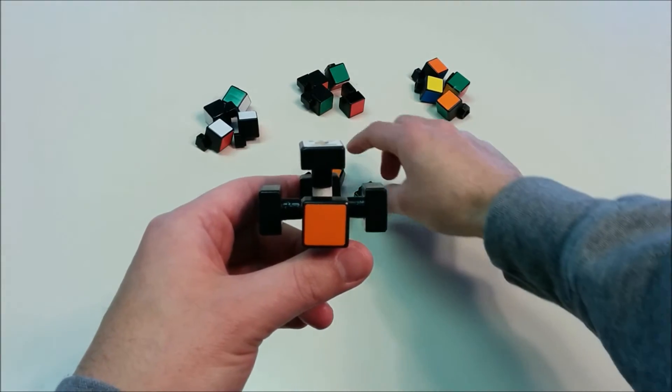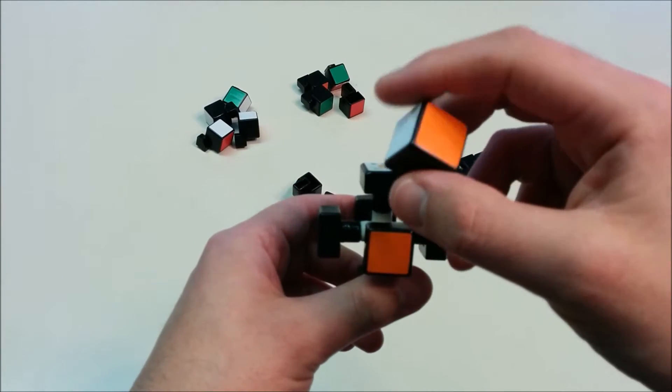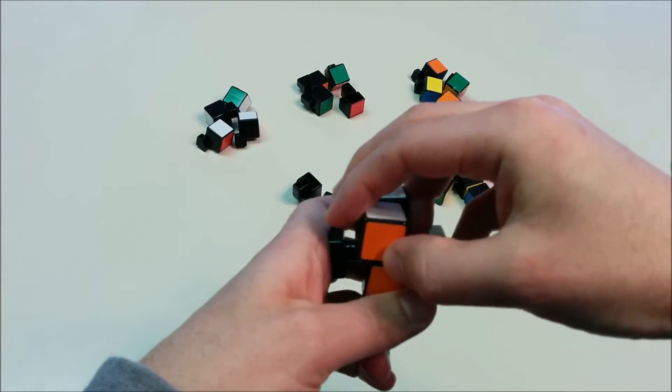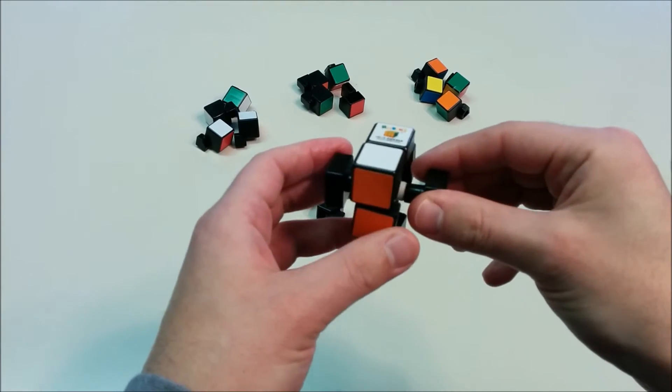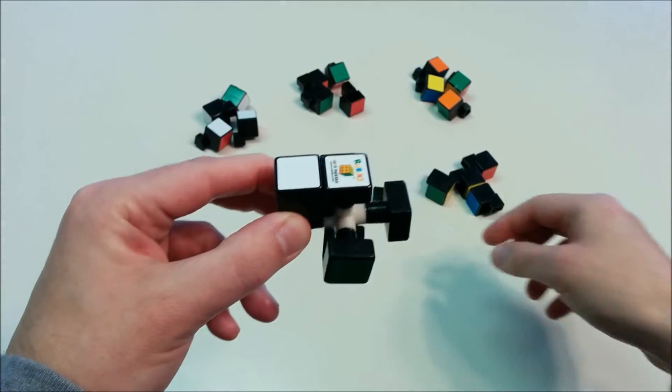So we're going to look at the edge pieces, and we want to match the edge pieces, which have two colors, to the other center pieces which don't move. So here we have an orange and white edge piece, and it has to go in that position to match the white, orange, and white sides.